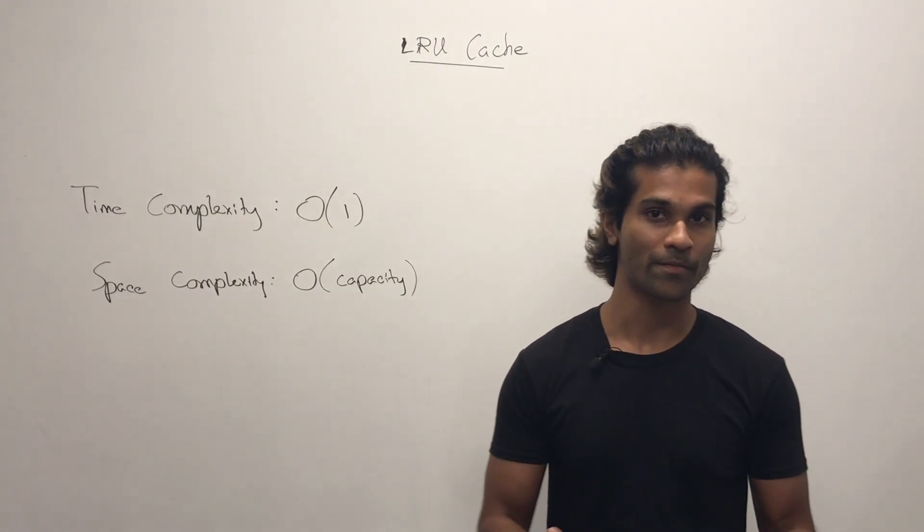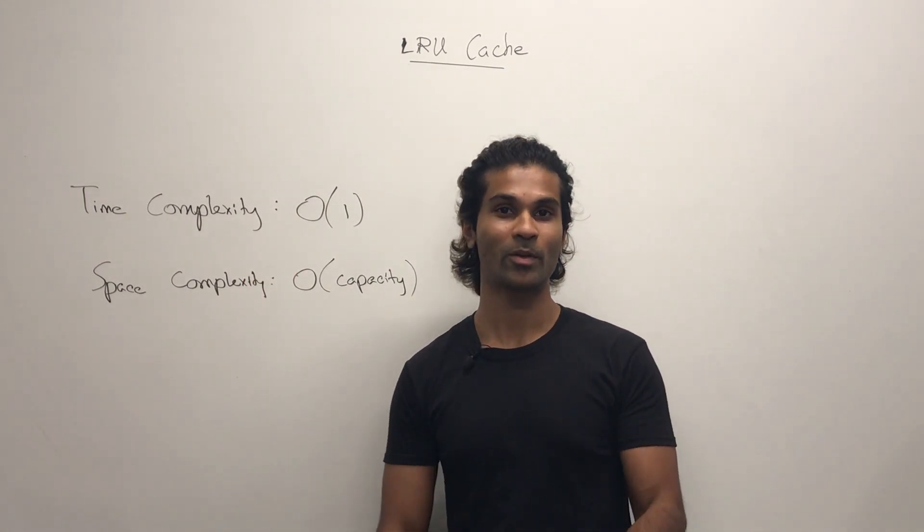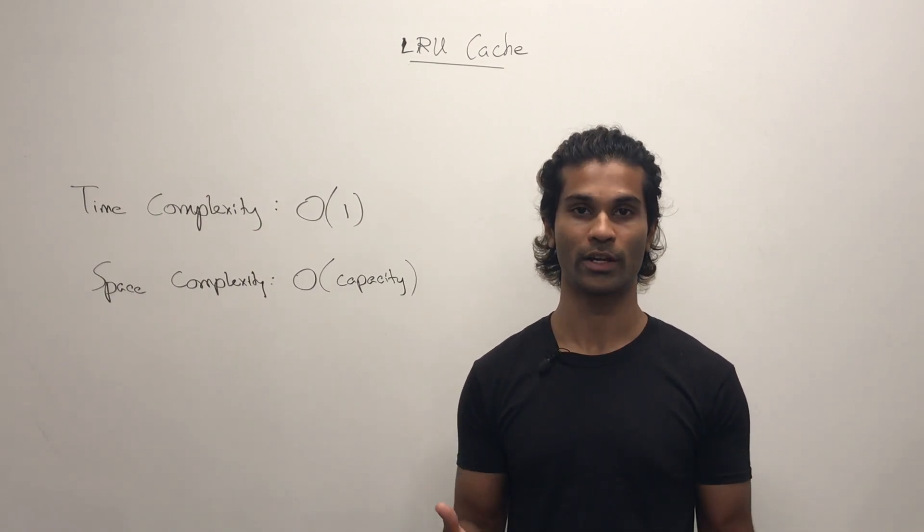The complexities are pretty straightforward here because they tell us. So O(1) is going to be the time complexity and the space complexity is going to be the size of the LRU cache when it was initialized.